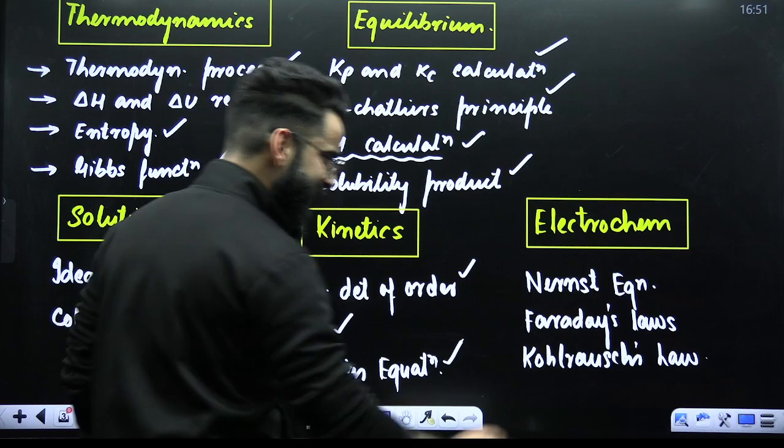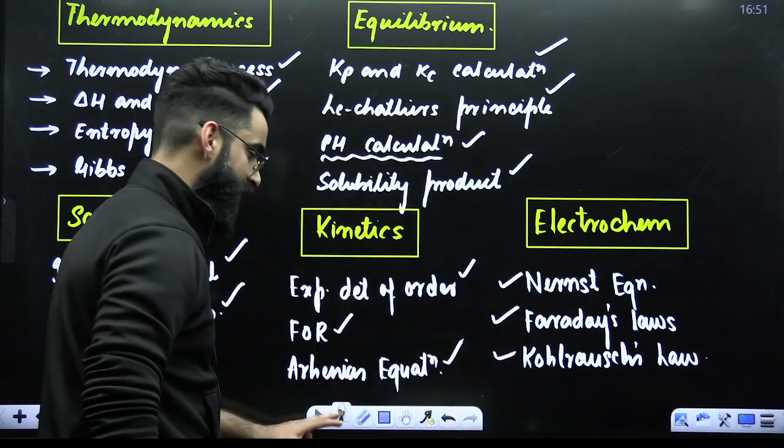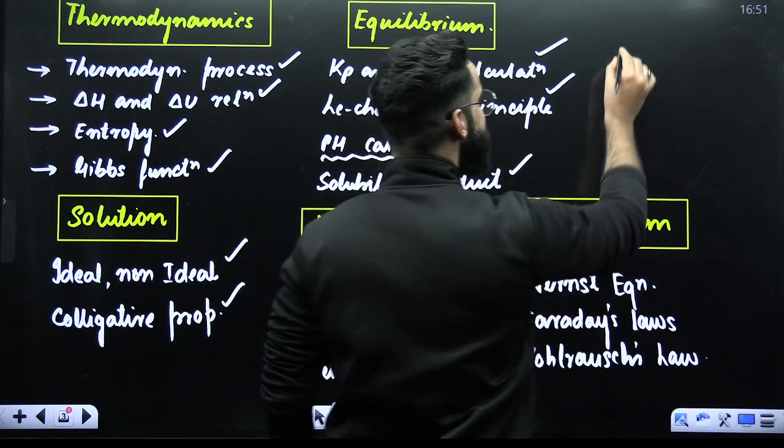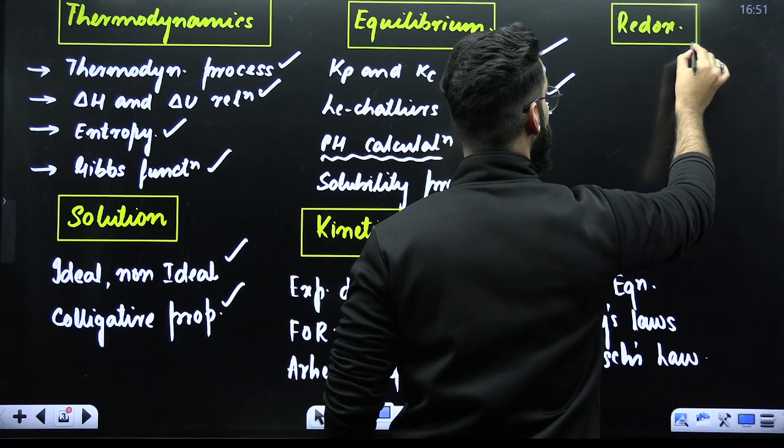When it comes to electrochemistry. In electrochemistry, my dear students, Nernst equation. Your Faraday's laws of electrolysis. And Kohlrausch's law. One chapter I have skipped here. What is that? That's your redox reactions. So let me note down redox important topics here only.